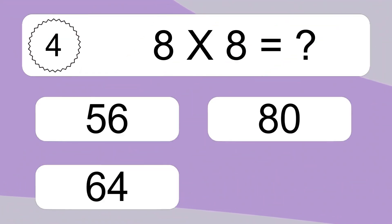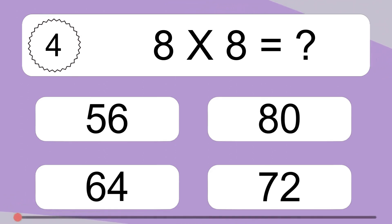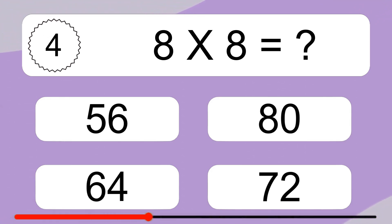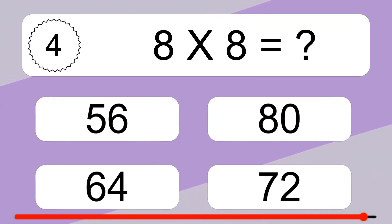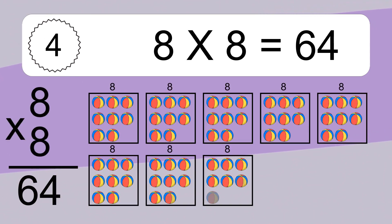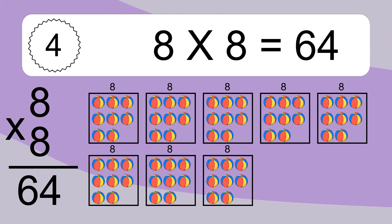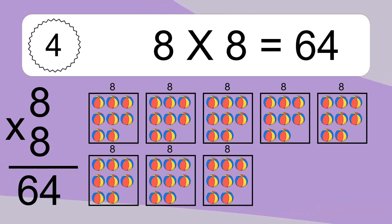4 times 6 equals 16. We have 8 boxes, and each box has 8 colorful balls inside. If you count all the balls in all the boxes together, you will have 8 times 8 balls. This equals 64 balls.